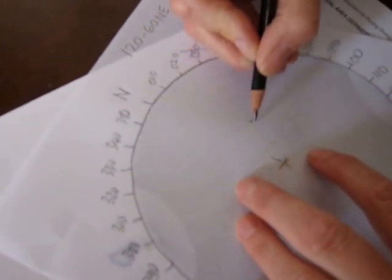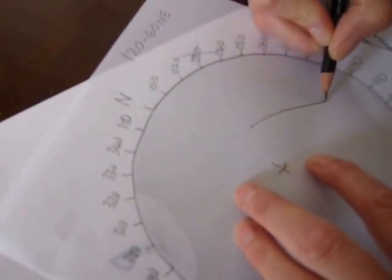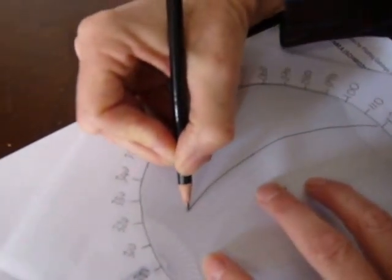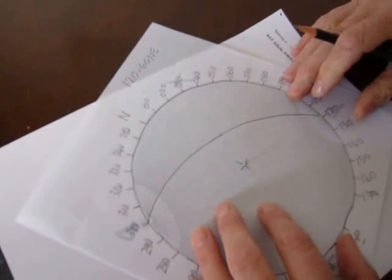And this then is the great circle that represents the plane that strikes 120 and dips 60 northeast.